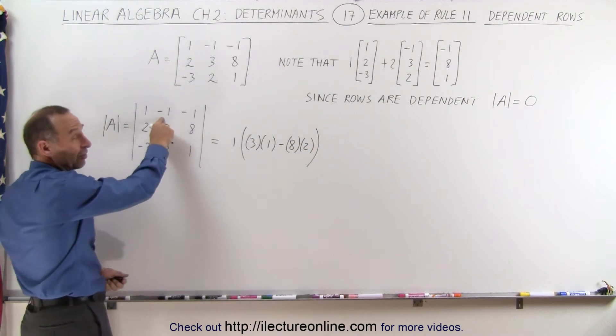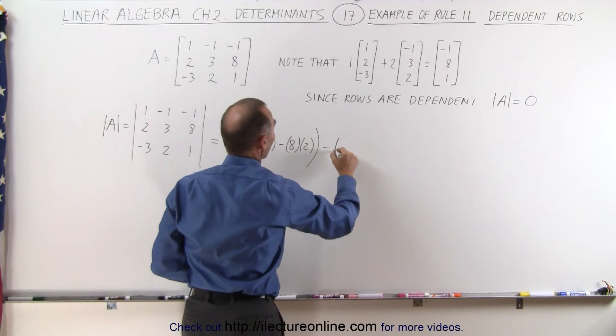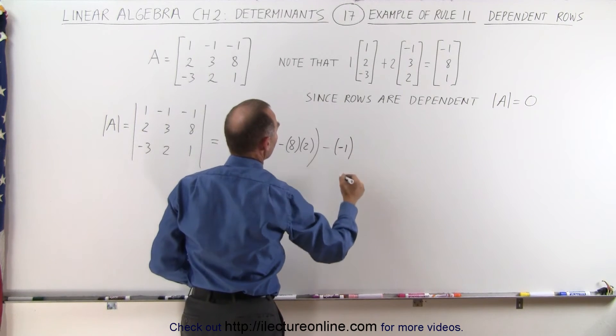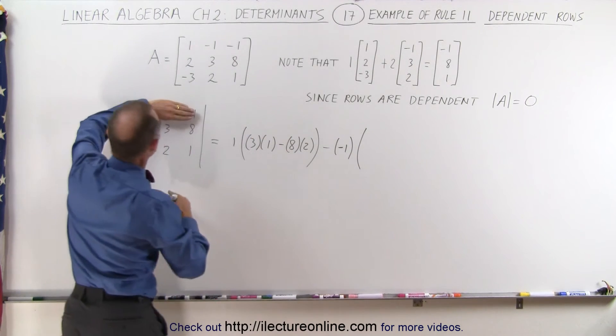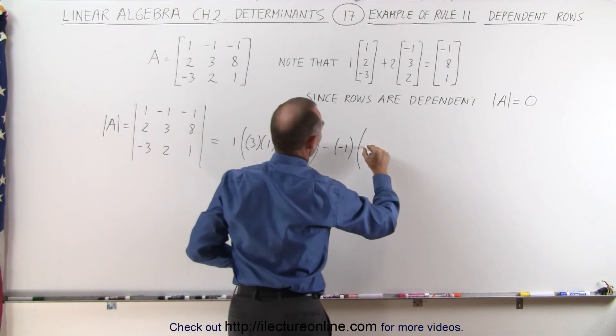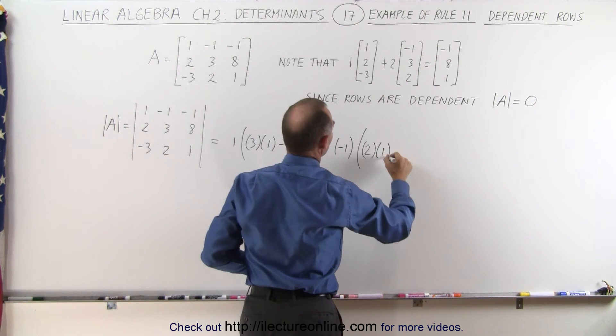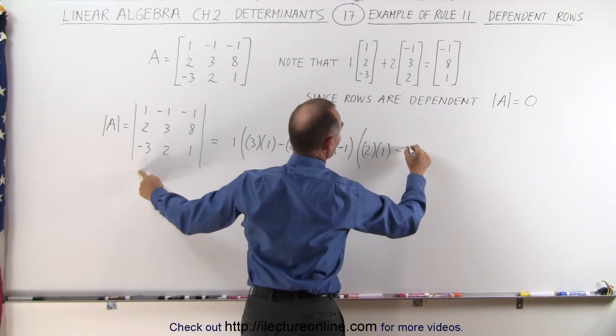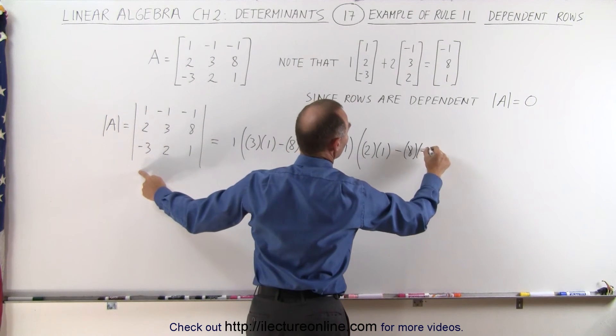Then we take the negative of this element minus a minus 1 times, we get rid of this row and this column, we end up with those four elements, that's 2 times 1 minus 8 times negative 3.